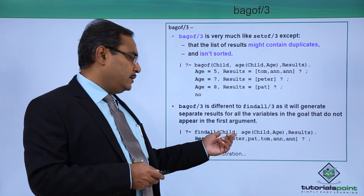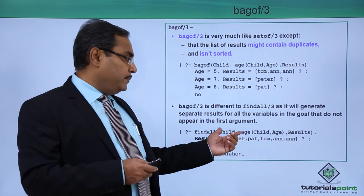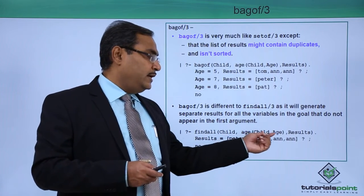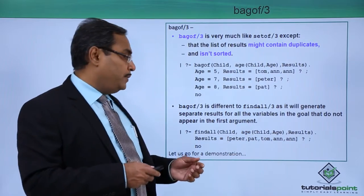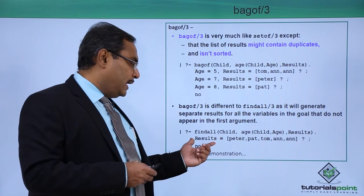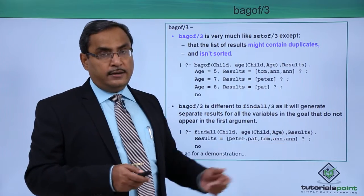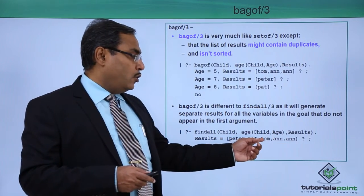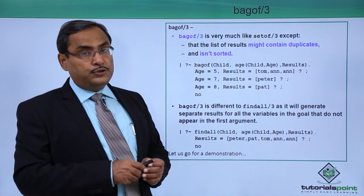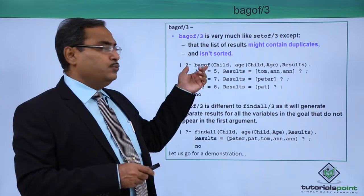Findall child, the results, that is the output results, will be containing all the child name and here it will be working on the knowledge base, that is age child, age child, age, in this way. On this knowledge base the result will be populated. This findall will be working and the results will be populated. The output will be coming like this, that is results is equal to Peter Pat Tom Ann and Ann. In this case you are getting Peter Pat Tom Ann and Ann, that means they are not sorted and all outputs are containing some repeat elements.